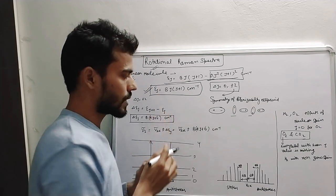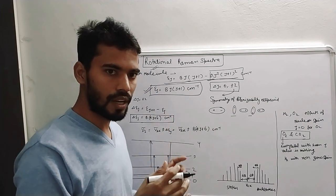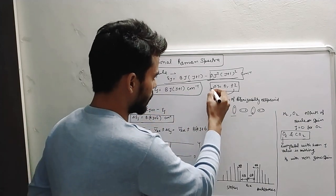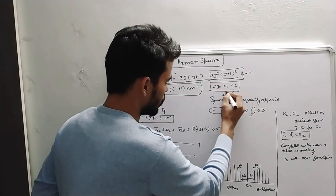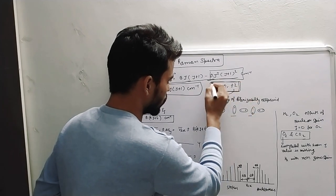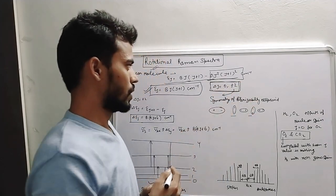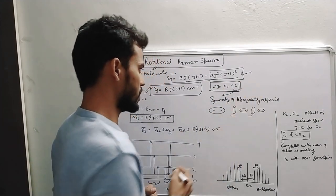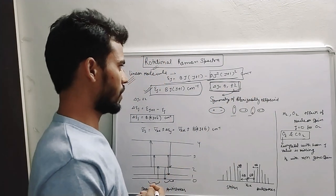The selection rule applied in the case of rotational Raman spectra is ΔJ = 0, ±2. This is the selection rule which applies here.